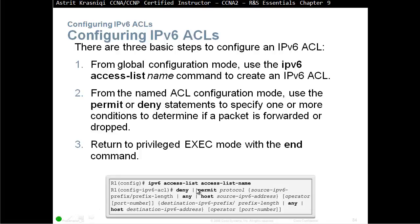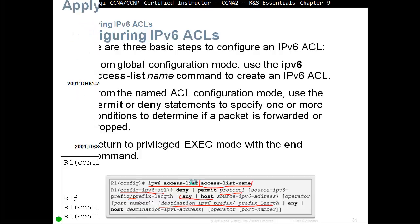This is similar to an extended IPv4 access list. We start with 'ipv6 access-list' followed by the name you choose. Then in ACL configuration mode (config-ipv6-acl), we enter deny or permit statements followed by the protocol — either a name or number representing an IPv6 protocol. Then the source IPv6 address including the prefix length (e.g., /64), which can also be 'any' or 'host', followed by the destination IP address.